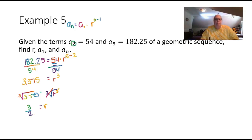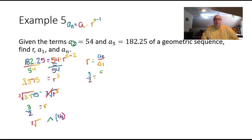Now that we have r, we need to find a1. We know r equals a2 divided by a1, so 3/2 equals 54 divided by a1. Cross-multiplying gives 3 times a1 equals 108, and dividing by 3 gives a1 equals 36.